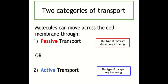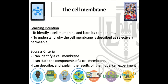Finally, we're going to look at two categories of transport across the cell membrane, which will be our focus for the rest of the lessons on this topic. Molecules can move across the cell membrane in two ways: through passive transport or through active transport. The main difference is that active transport uses energy whereas passive transport does not. A useful way to remember this is that if you're active you're using energy, whereas passive means you're not. Within this lesson we have learned to identify the cell membrane, state its two components, and describe and explain the results of the model cell experiment.